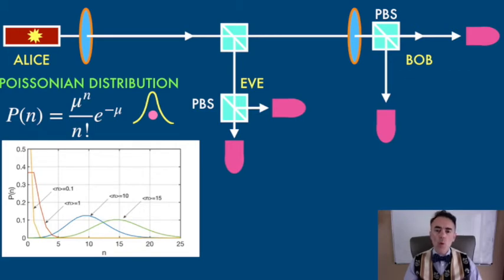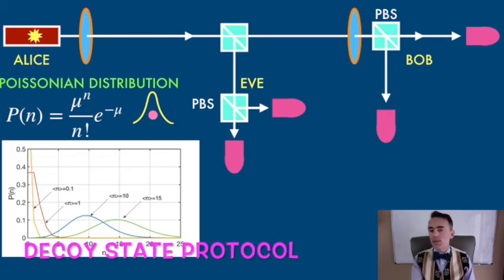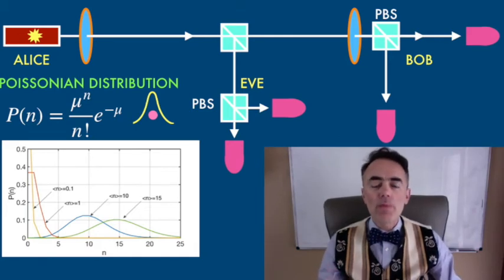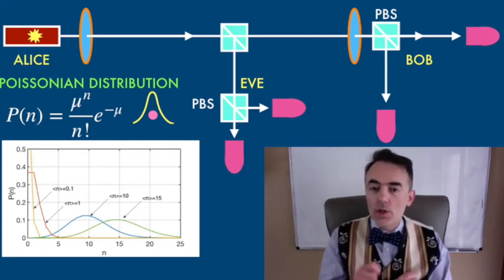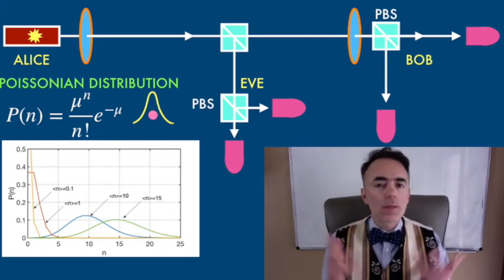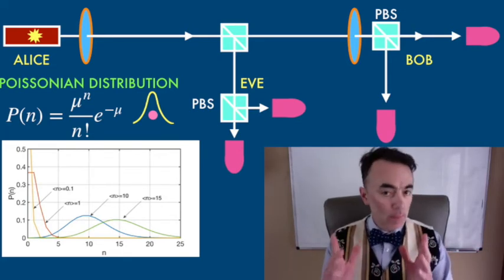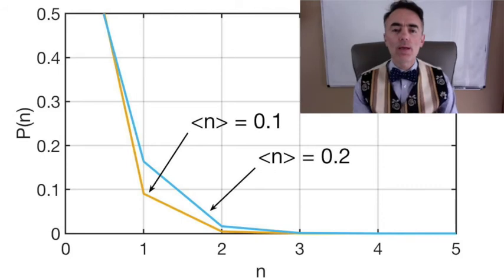How can we prevent Eve from tampering with multi-photon pulses? Well, there is the so-called decoy state protocol. This Poissonian distribution depends on the mean photon level, so on the intensity of the laser. Alice can send different intensities in each pulse.